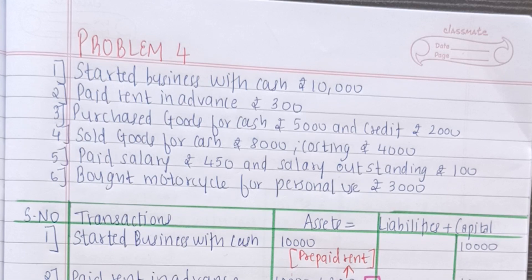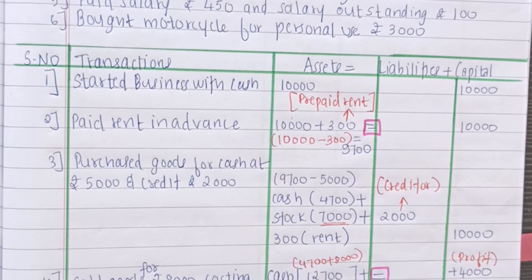So here we can see that rent paid in advance Rs.300. So what we will do is 10,000 minus Rs.300. First entry would be 10,000 minus Rs.300. It means our cash is Rs.9700. We have to then write plus 300. Why plus 300? Because this is the prepaid rent. Prepaid rent is an asset.